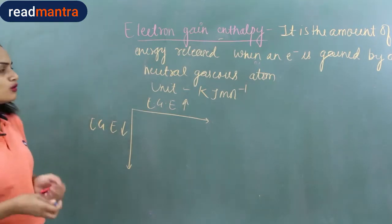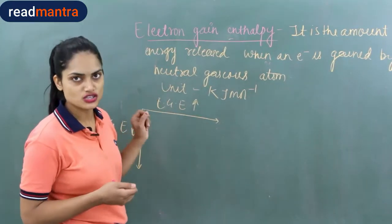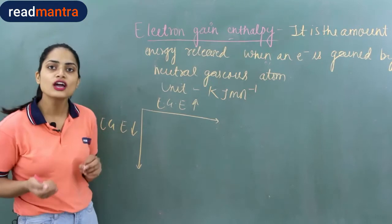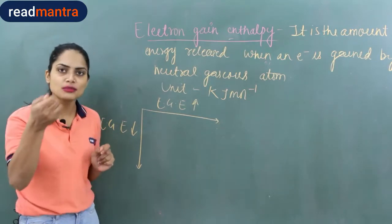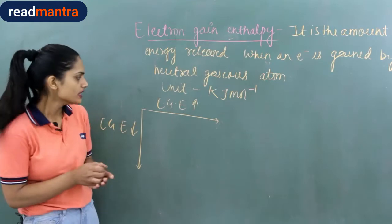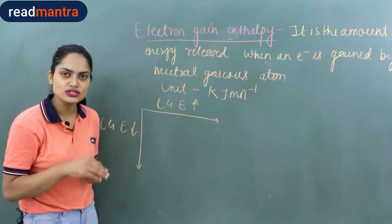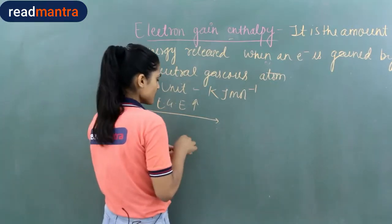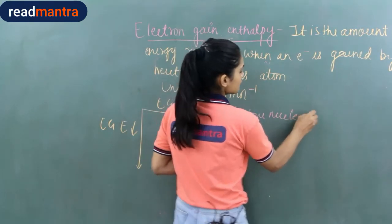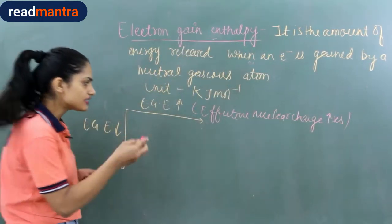Why is this? Across the period, size decreases and effective nuclear charge increases. The incoming electron is attracted more strongly to the nucleus, so more energy is released. This is why electron gain enthalpy increases across the period.